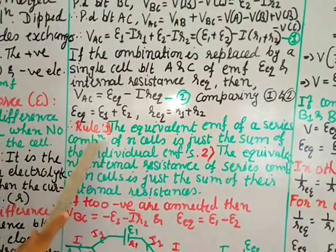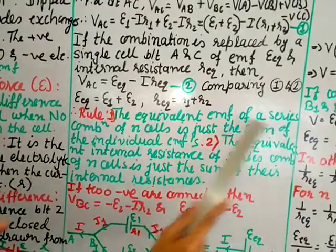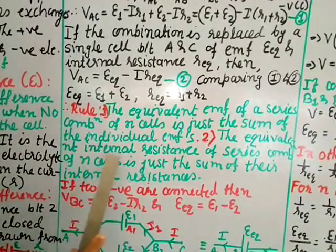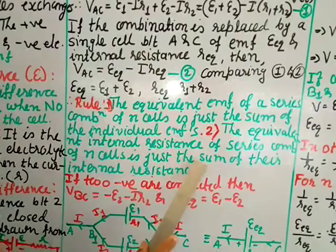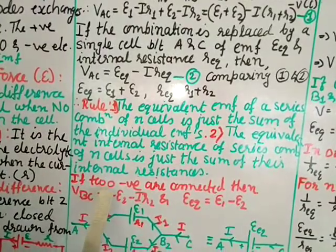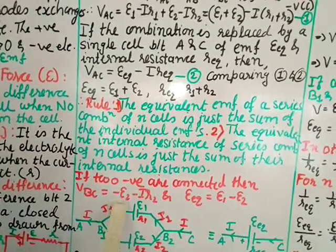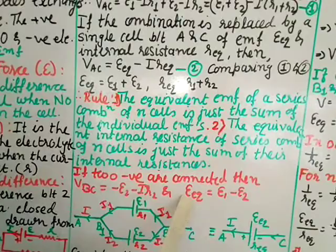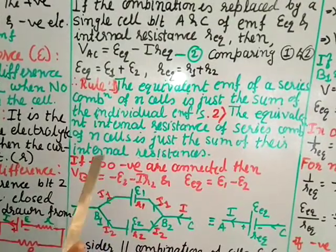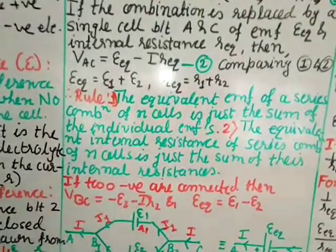The series rule: the equivalent EMF of a series combination of n cells is the sum of individual EMFs — E1 + E2 + … + En — and the equivalent internal resistance is the sum of individual internal resistances — r1 + r2 + … + rn. If two negative terminals are connected together instead, Vbc becomes −E2 − ir2, so the equivalent EMF becomes E1 − E2.